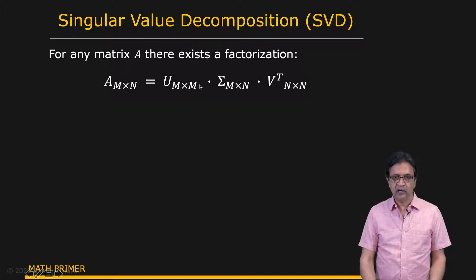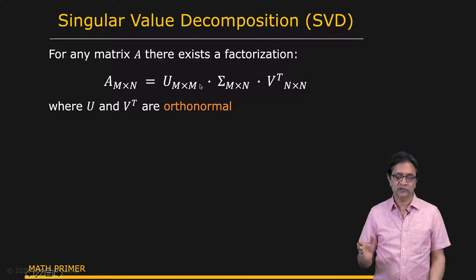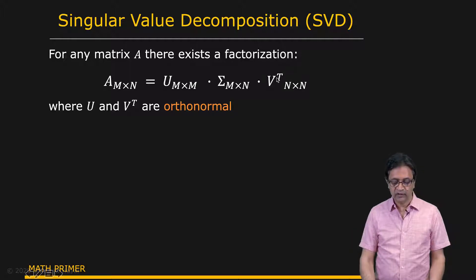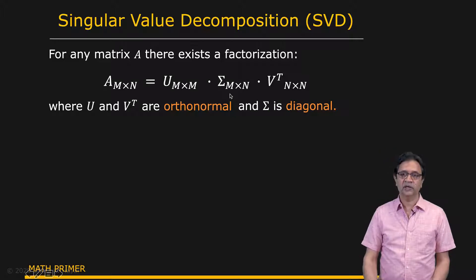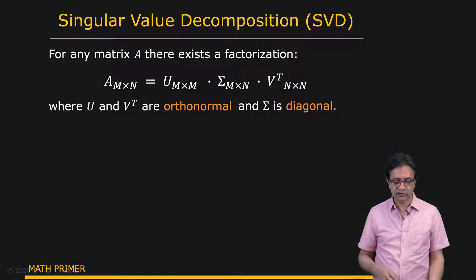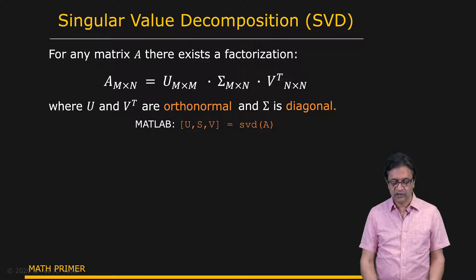U and V are orthonormal matrices. Of particular importance is the matrix sigma in the center, which is a diagonal matrix. To compute this, there are standard methods — for instance, in MATLAB, you would say SVD of A and get outputs U, S, and V, where S corresponds to the sigma matrix.